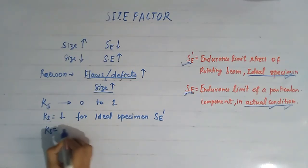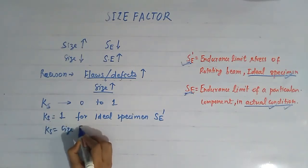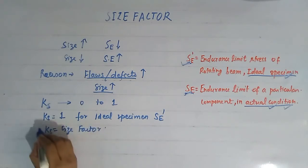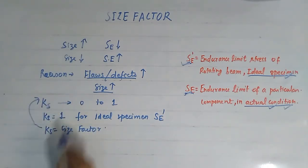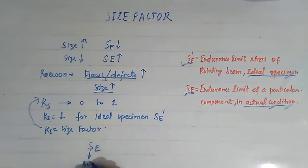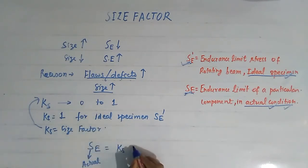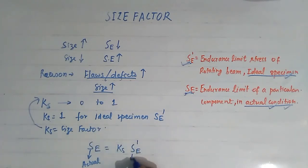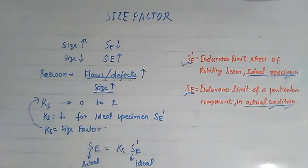The size factor Ks varies from 0 to 1, and the endurance limit of the actual specimen is: Se = Ks × Se'. Since Ks varies from 0 to 1, the value of Se — the endurance limit for the actual specimen — will always be less than Se', the endurance limit for the ideal specimen.